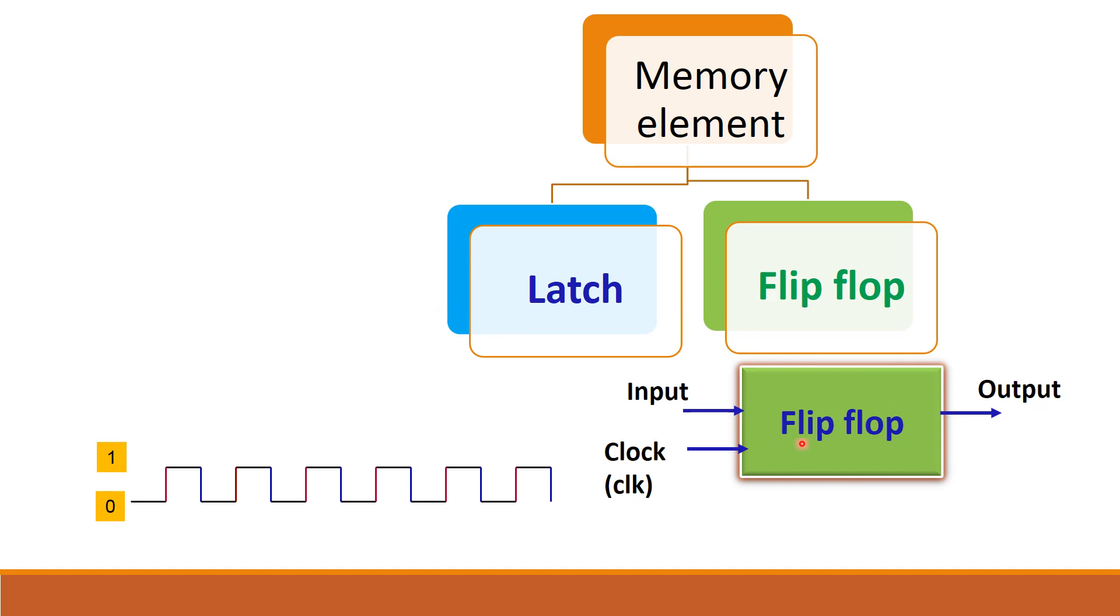But in case of flip-flop, it will respond only to the transitions. That is either when the pulse changes from 0 to 1 or 1 to 0, it will respond. So depending upon how it responds, there are two types of flip-flop: positive edge triggered and negative edge triggered.